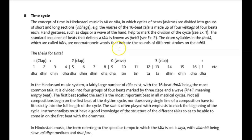There are quite a few terms to understand here. In the Hindustani music system, a fairly large number of talas — rhythmical cycles — exist. The 16-beat tala, known as tintal, is the most common. It is divided into four groups of four beats marked by three claps and a wave. Kali means empty beat. The first beat is called the sum — so beat one, five, nine, and thirteen are sum — and it is the most important beat in all rhythmical cycles.